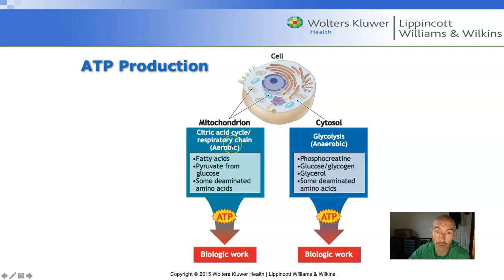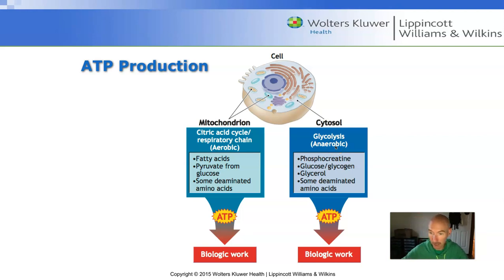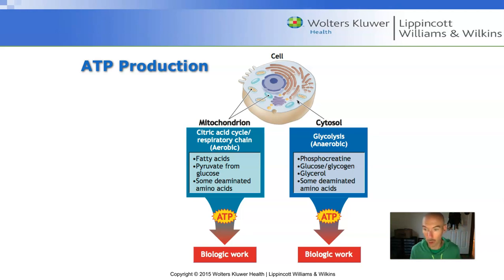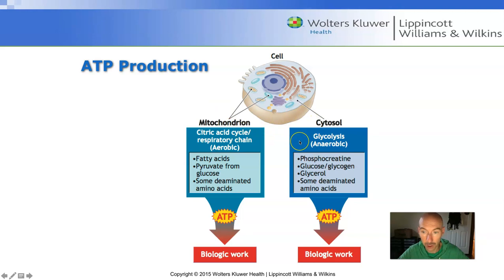Aerobic energy production is much more efficient — it produces a lot more ATP, but it takes a little bit longer. Anaerobic energy production is less efficient and produces less ATP, but it occurs and provides ATP much more rapidly because it exists in the cytosol. If a cell needs energy very rapidly, glycolysis is used. If a cell needs energy more slowly but a lot of it, aerobic energy production is used. It's not an either/or thing — it's more like a dimmer switch. At all times, we're never using just one of these. Usually it's a blend of the two, depending upon the activity.